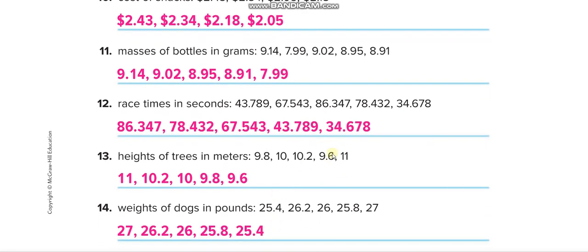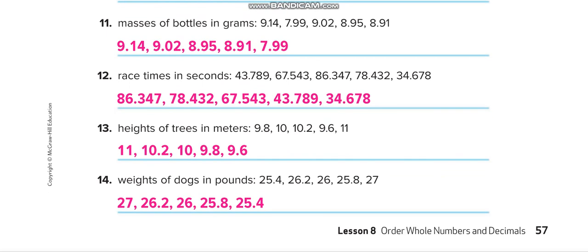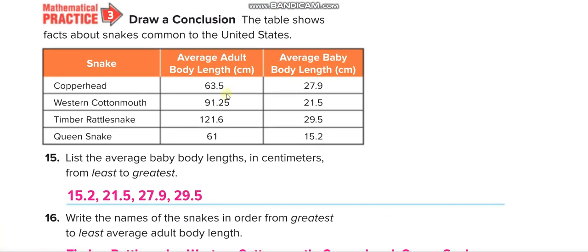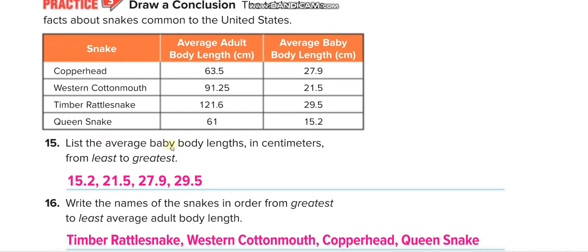Moving to page 58, a table shows facts about snakes common to the United States: copperhead, western cottonmouth, timber rattlesnake, and queen snake. It lists their lengths in centimeters as adults and as babies. The first question asks you to list the average baby body lengths from least to greatest.